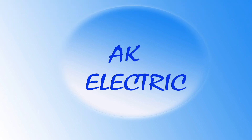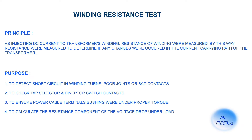Hi friends, welcome to AK Electric YouTube channel. Now we are going to see winding resistance test. Principle: by injecting DC current to transformer windings, resistance of windings is measured. By this way, resistance is measured to determine if any changes have occurred in the current carrying path of the transformer.